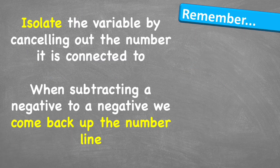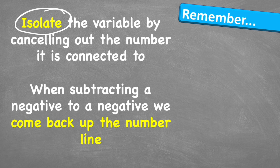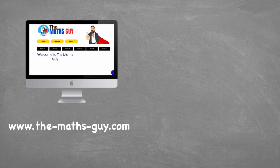And there you go. Let's just think about what to remember. First we're going to isolate the variable by cancelling out the number it's connected to by using the inverse operation. And when subtracting a negative from a negative we're going to end up coming back up the number line, which can be a little bit hard to understand. If you need help, draw that number line — that'll help your mind understand exactly what you're doing. In our next video we're going to be looking at how to solve one-step equations involving negative multiples. So if you're not a subscriber already, be sure to subscribe and share this video with somebody that you think might need this little bit of help as well. But for now, peace out.